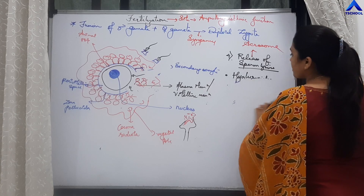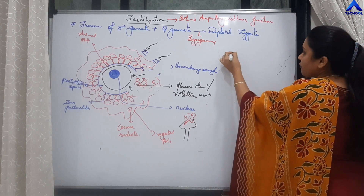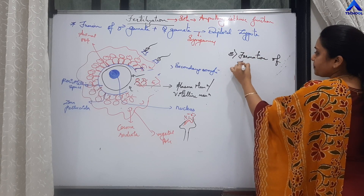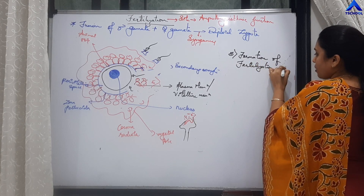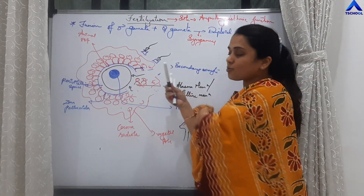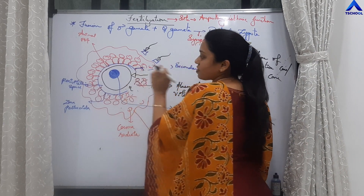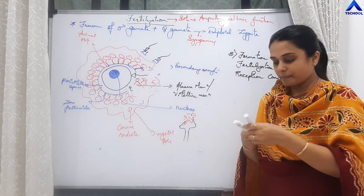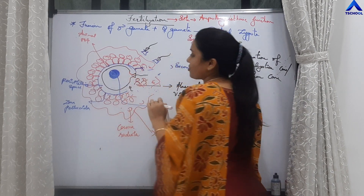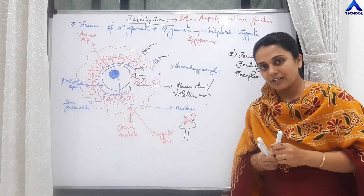Step 5 is the formation of the fertilization cone, also called the reception cone. Once the sperm reaches the plasma membrane (vitelline membrane) of the ovum, a pond-like structure is formed, called the fertilization cone or reception cone.